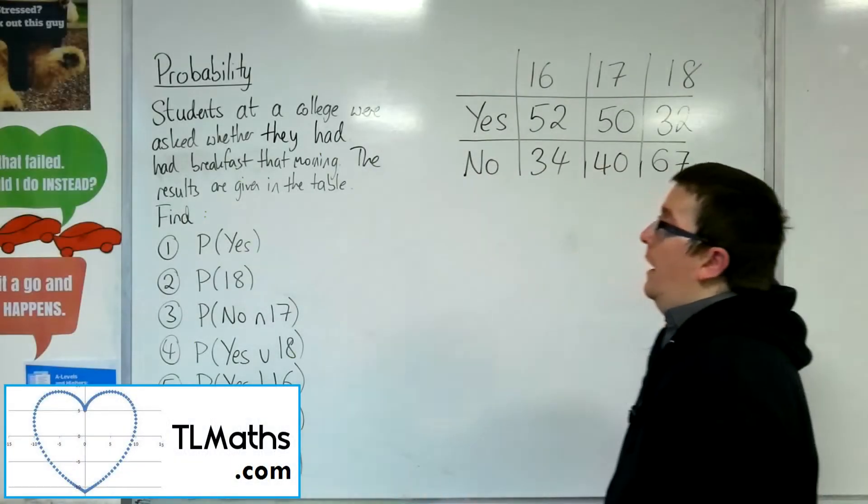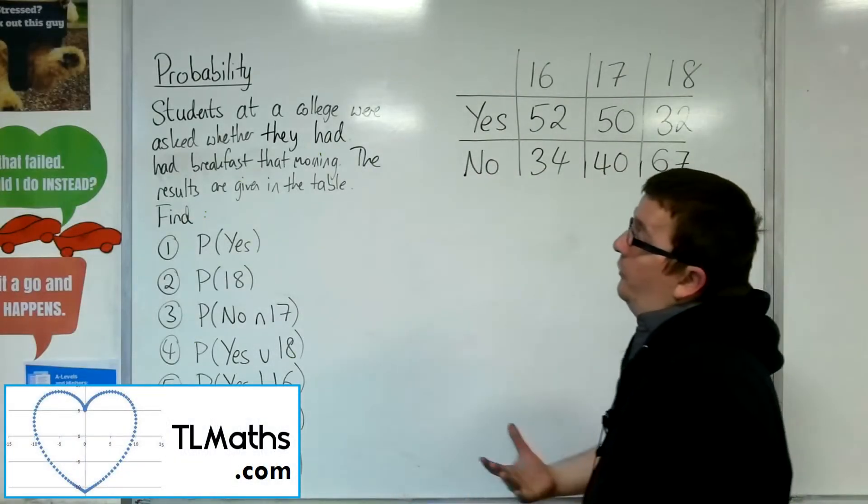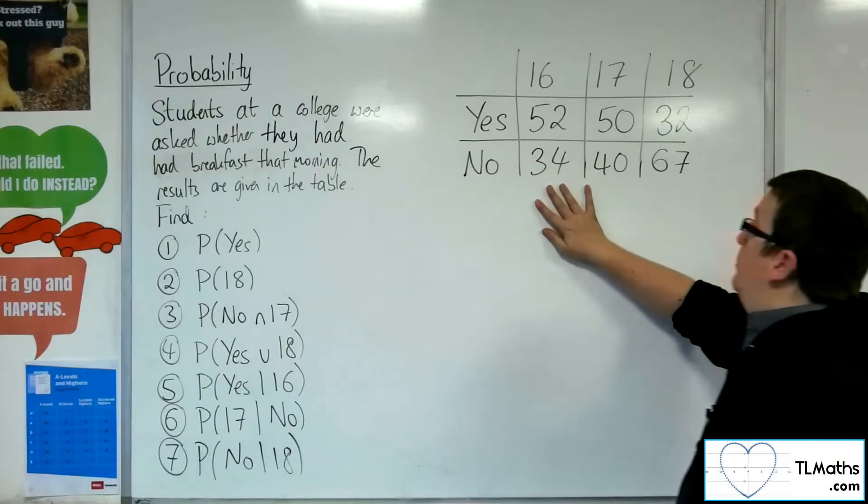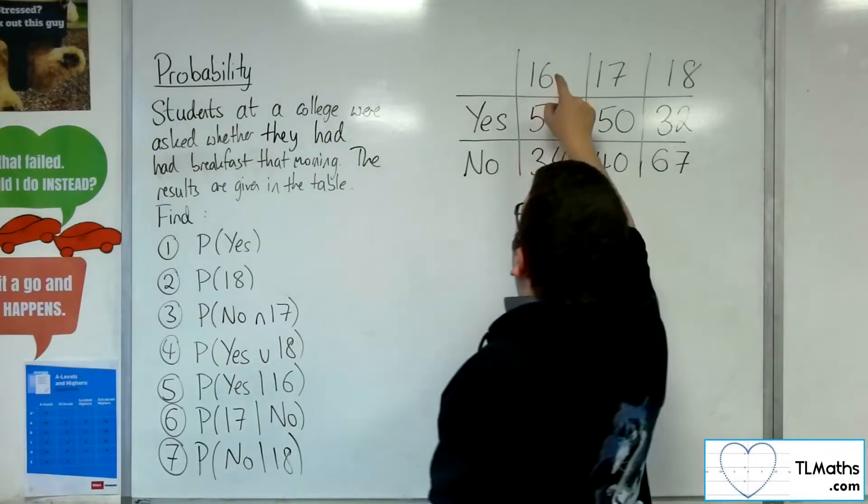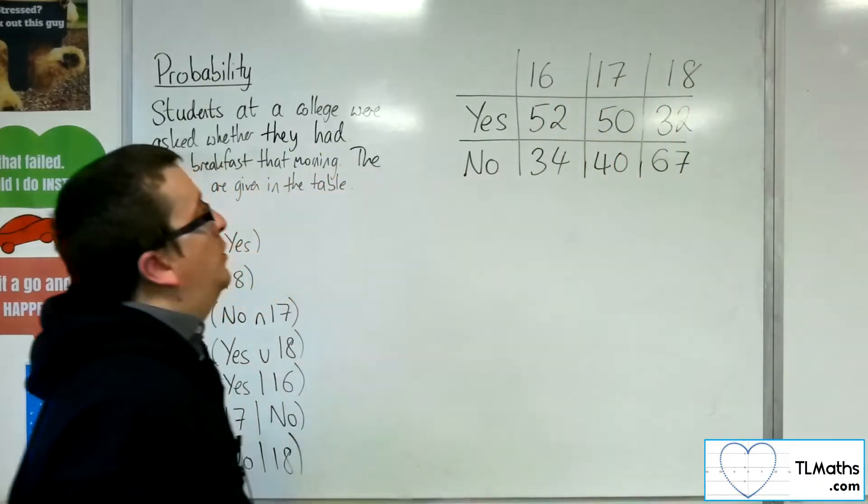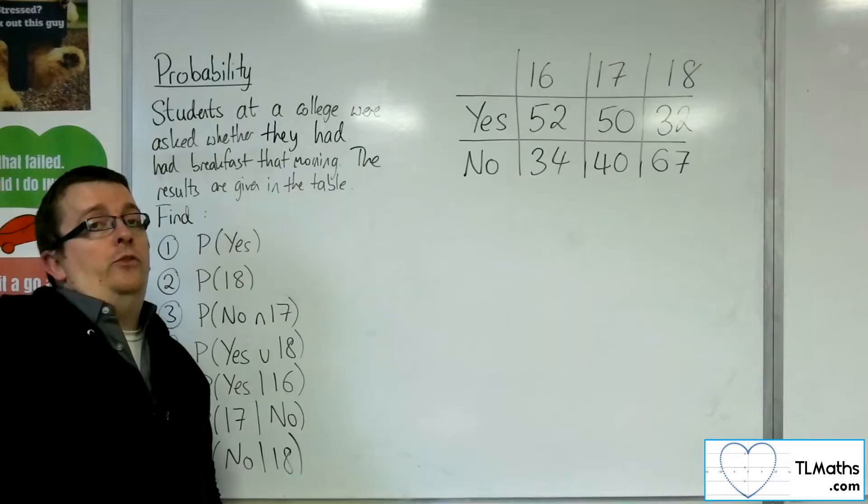Okay, so in this problem, we've got students at a college who are asked whether they had breakfast that morning. The results are given in the table. So we've got a two-way table. Their ages - 16, 17, and 18 - have been recorded, and whether they said yes or no.